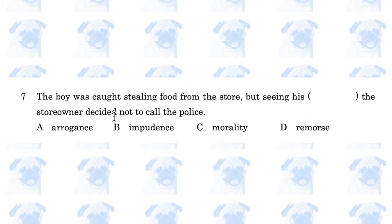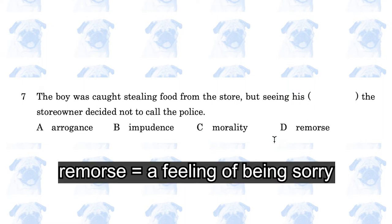The boy was caught stealing food from the store, but seeing his blank, the store owner decided not to call the police. The answer is D, seeing his remorse. Remorse is the feeling of being sorry for what you have done.